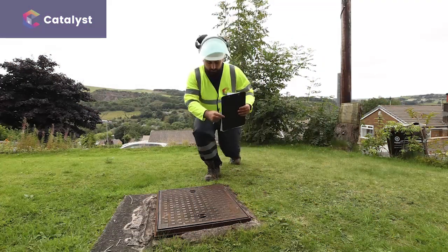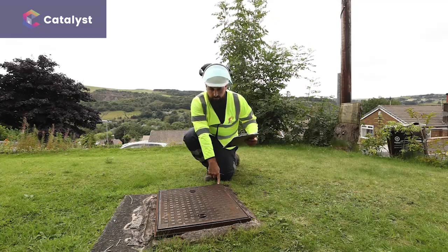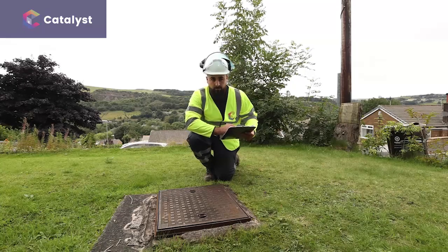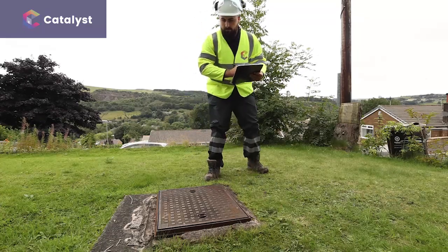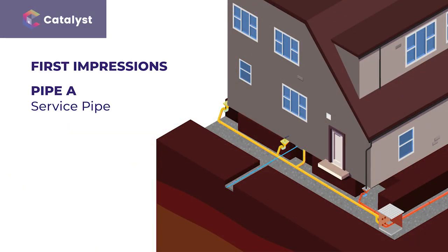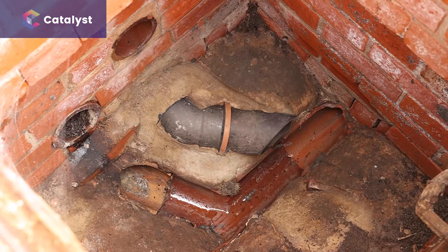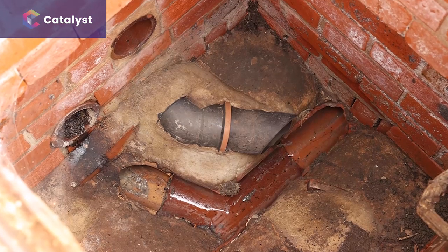Drawing on experience and an initial visual inspection, a drainage engineer can often make a good guess at the structure of the drainage system at a property like this. First impressions here are that a service pipe down the side of the house picks up the surface water and foul water and then empties into the chamber, with the front corner gully feeding into the chamber independently. The only way to be sure though is to carry out a thorough CCTV survey. Based on what we can see in the manhole, the drainage in this property is made up of clay pipes.